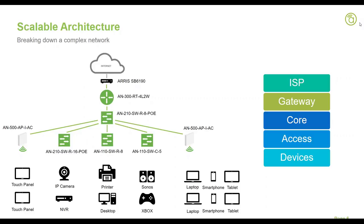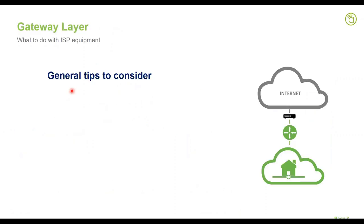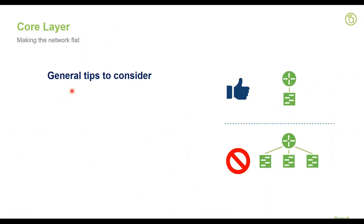Question: if there are only two switches on a network, should they be stacked — one off the router and the other off that switch? Yes, ideally. You do not want two switches both connected directly off the router, because traffic between those two switches would then go through the router, resulting in spanning tree issues, IGMP issues, and inter-VLAN routing performance degradation. Ideally you want one as the core and one as the access, with the access connected to the core.